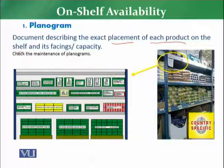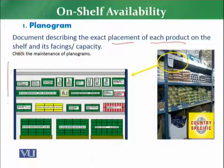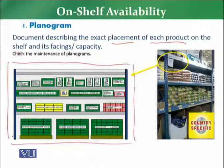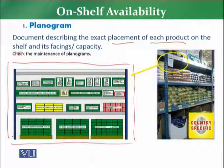The planogram specifies how many facings, how much capacity, how much quantity, and which size — everything has to be mentioned in the plan. Generally, a planogram is a plan on paper or in the system that reflects how many products, how many facings, and how much capacity has to be displayed in the store.